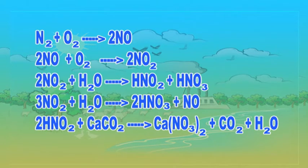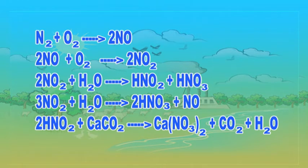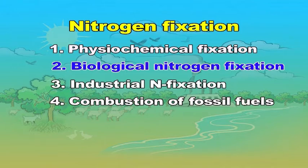This can be summarized as: N2 + O2 → 2NO; 2NO + O2 → 2NO2; 2NO2 + H2O → HNO2 + HNO3; 2NO2 + CaCO3 → Ca(NO3)2 + CO2 + H2O. The second type is biological nitrogen fixation.